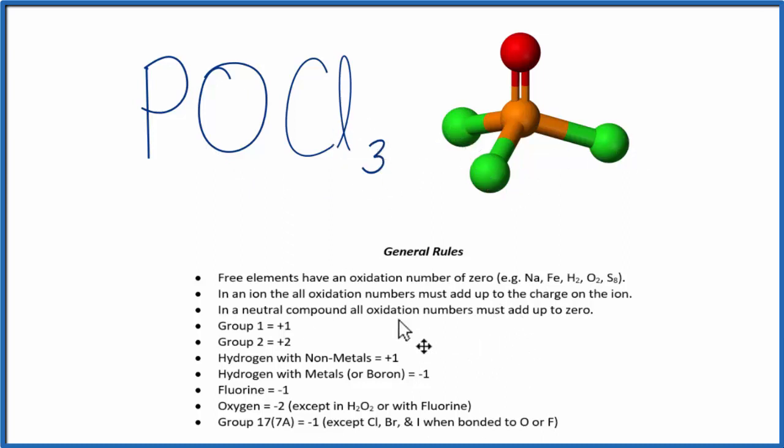So we use these rules here to find the oxidation numbers. Looking down the list, I don't see phosphorus, but here's oxygen, and oxygen is almost always a minus two, with a few exceptions. So the oxidation number on the oxygen is minus two.